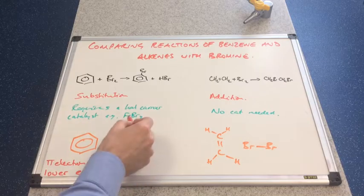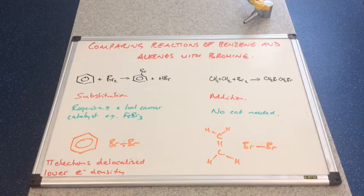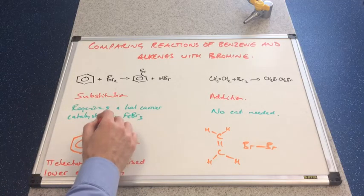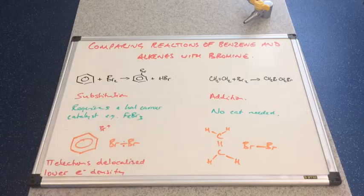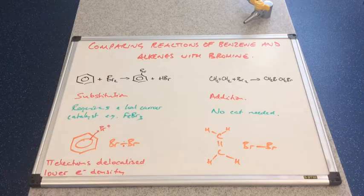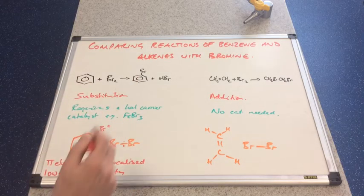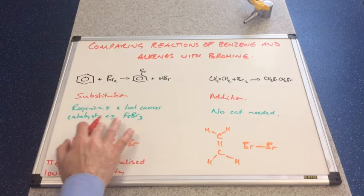And it's only when the catalyst is brought in, it is able to generate the electrophile. And then when you've got the Br+, remember, electrophile, then you can get the attraction. You can get the pair of electrons from the pi electron cloud coming out. Without the catalyst, that can't happen.